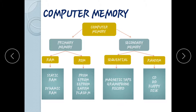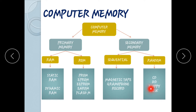For example, on a magnetic tape, if you want data at site B, you must pass through site A first. You have to rewind or fast-forward through the tape sequentially to access the data.